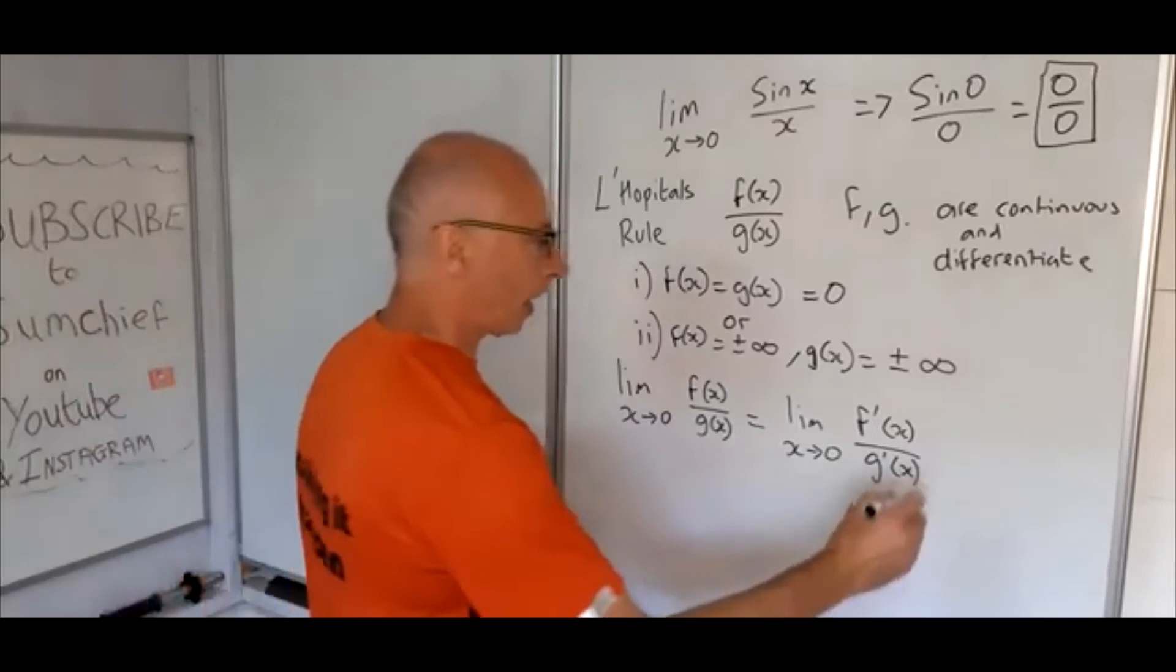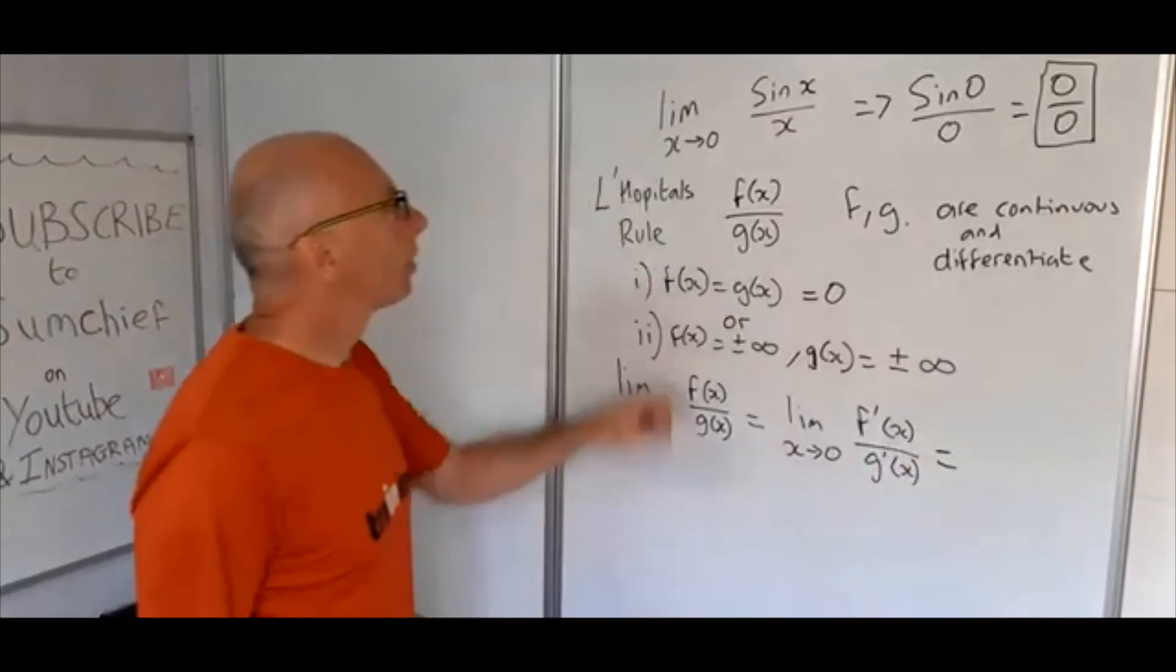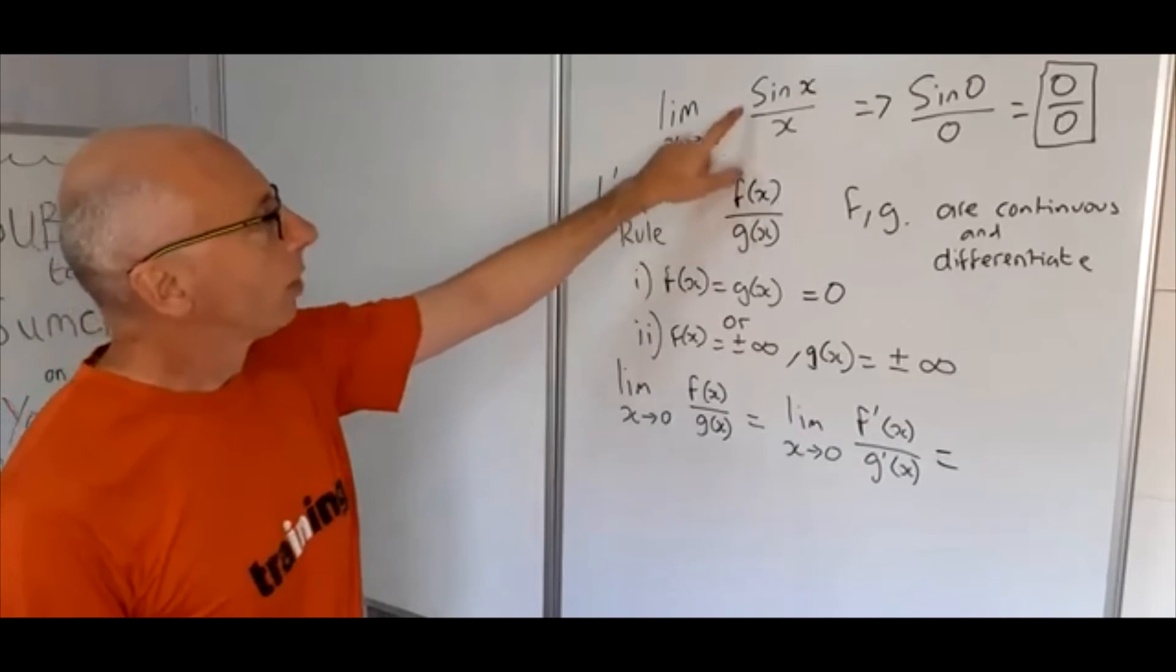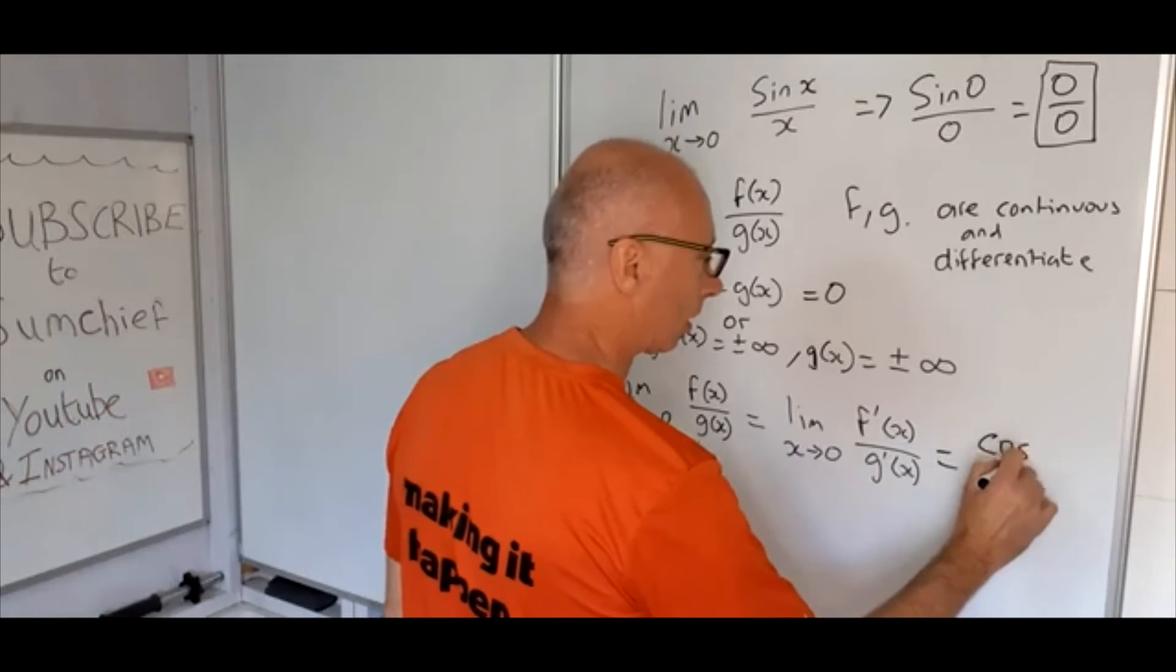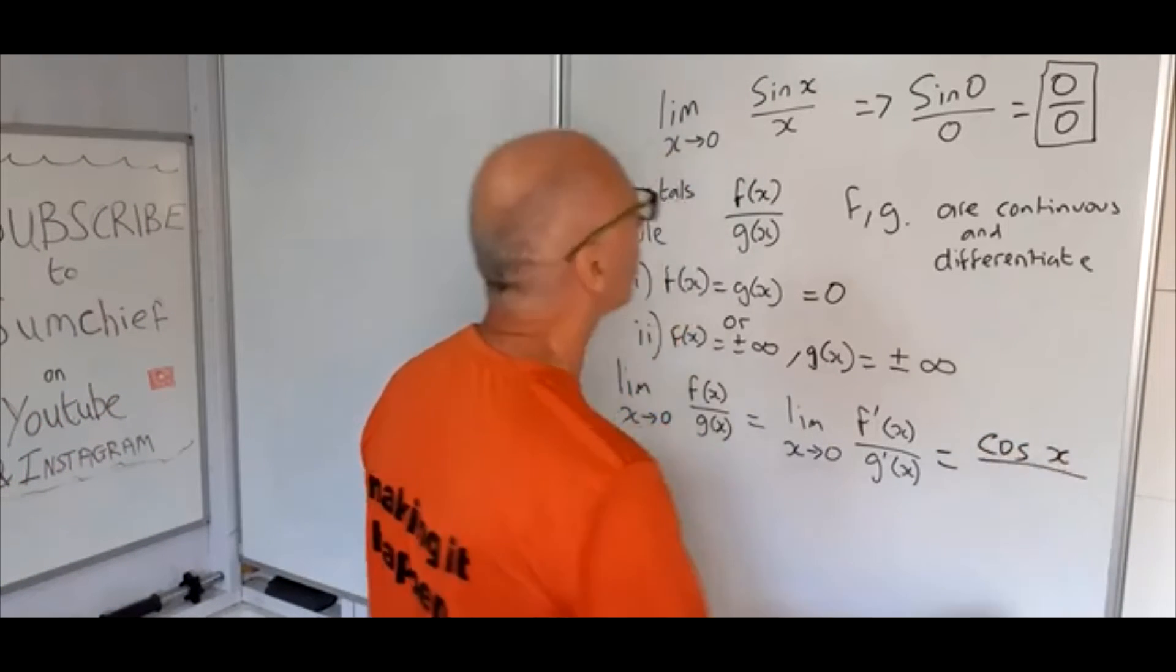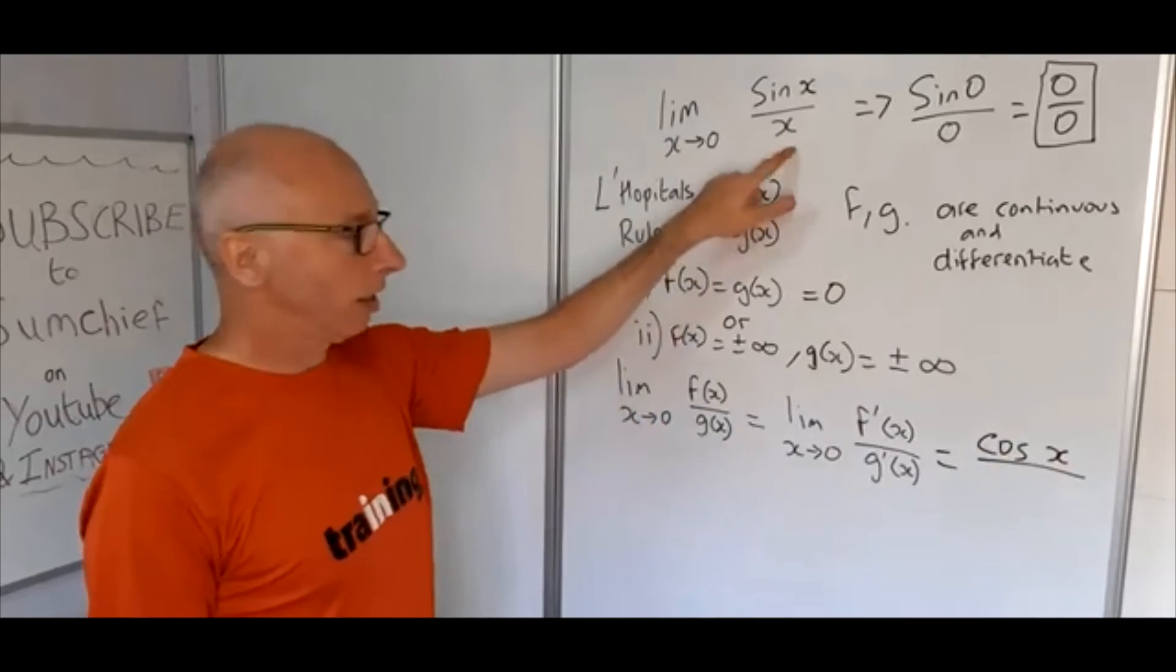So this is how we can find our answer to this question. The derivative of sine of x we know is cosine of x and the derivative of x is just one.